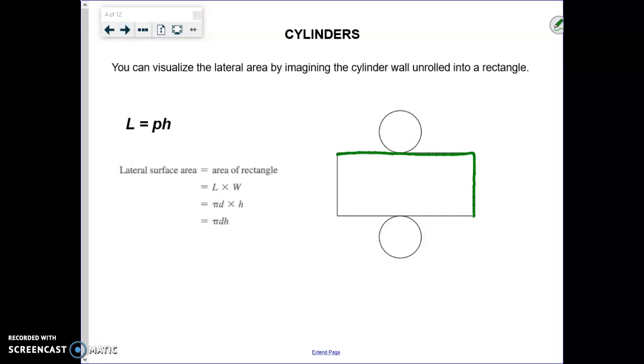So your lateral area is equal to the perimeter of your base times your height. Now, the perimeter of the base - remember these are circles - that's the circumference of the circle. Circumference is 2πr, or in this case π times diameter. And then you have the height, the distance between the two bases.